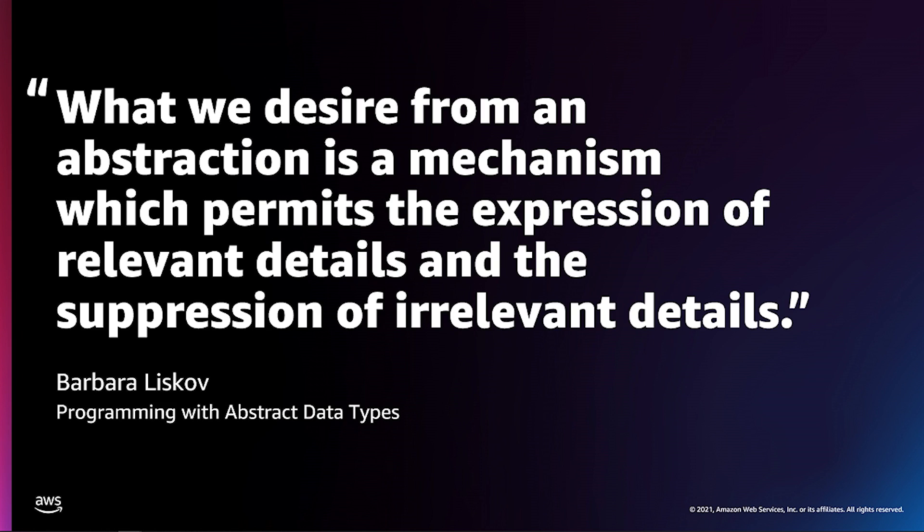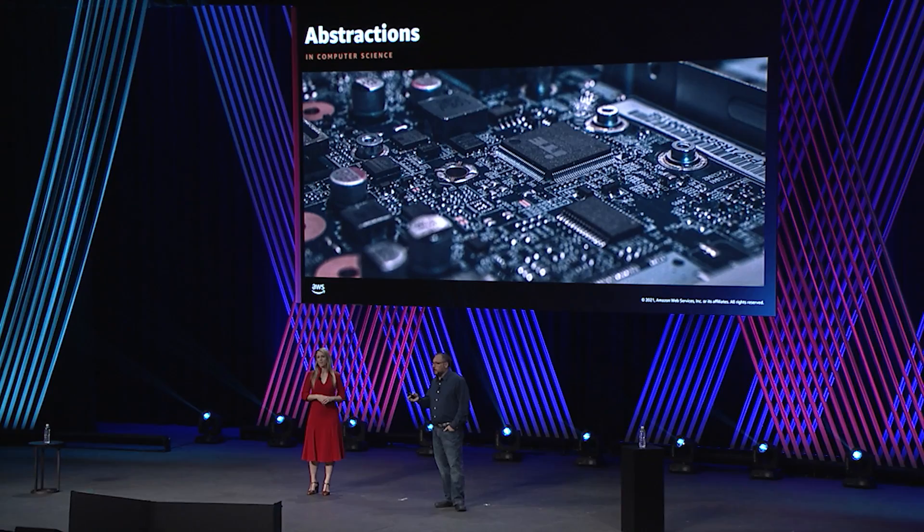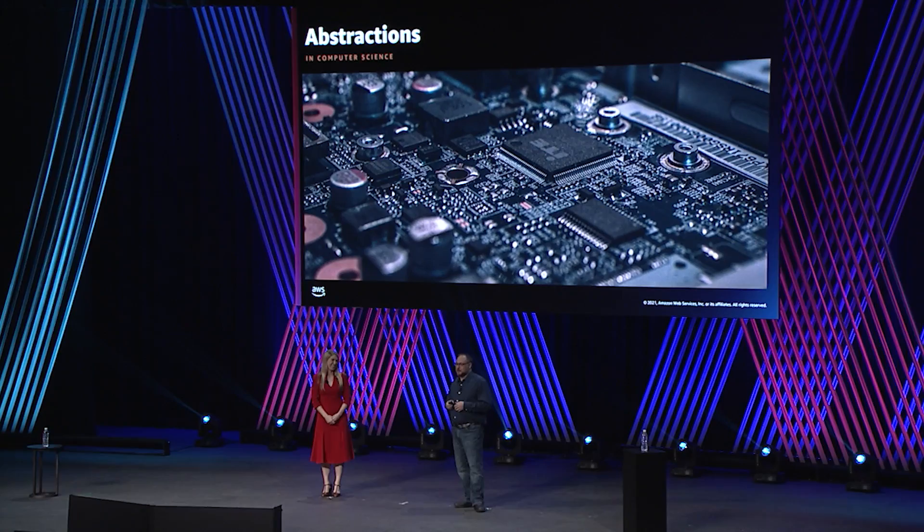Abstractions are fundamental to software development and have been since forever. In object-oriented programming, an object is an abstraction. In functional programming, a higher-order function is an abstraction. Data types are an abstraction of data structures. A procedure or subroutine abstracts control flow. But it goes even deeper than that. Operating systems abstract hardware so well that you don't have to think about it anymore — you don't have to think about resource management when you keep 983 tabs open in your browser and try to code at the same time. You simply don't have to consider physical memory anymore.